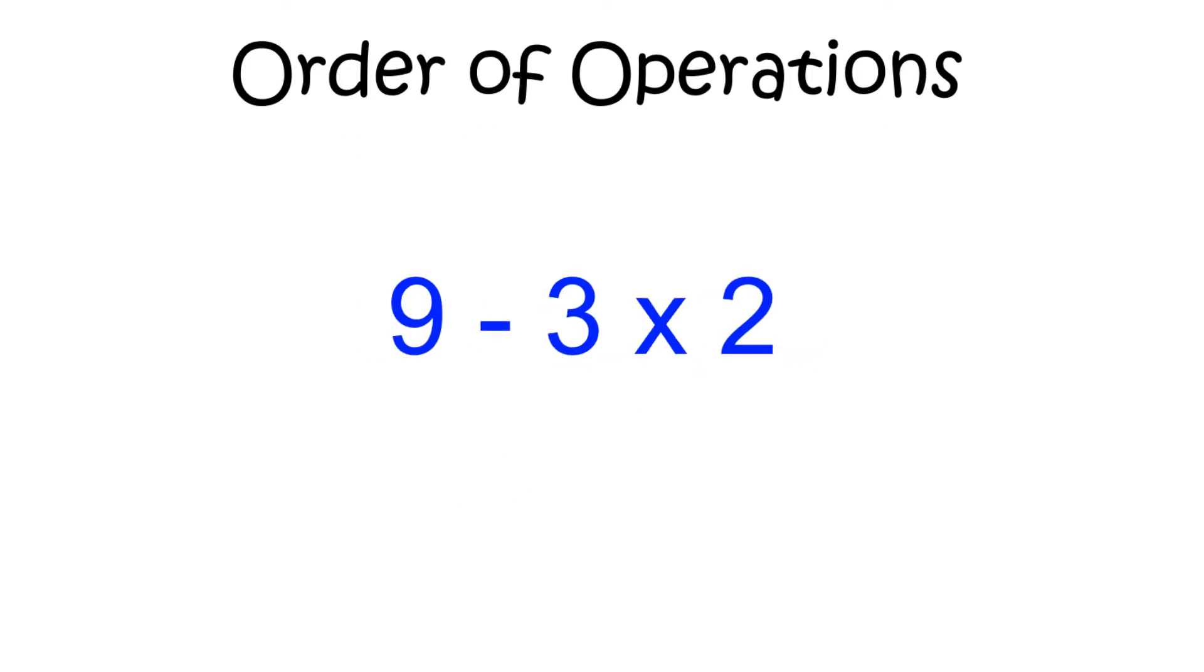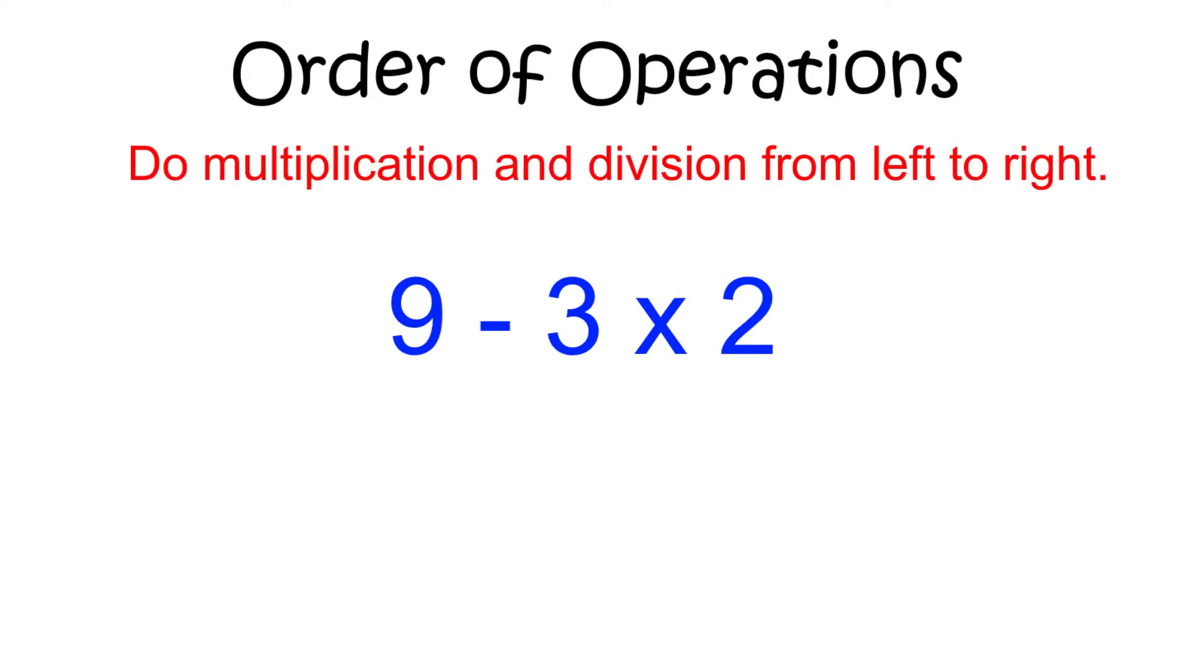Even when you do not see parentheses in a problem, there is still a specific order you must do the work. You should always complete multiplication and division first, working left to right. At this stage, we can ignore any addition or subtraction. In this problem, we will begin by solving 3 times 2, which equals 6.